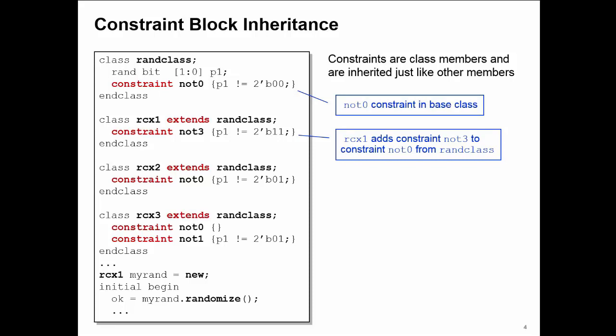Now in RCX2, my second subclass, I am redefining the constraint NOT0 from the base class. So I'm overwriting it by re-declaring it with the same name.